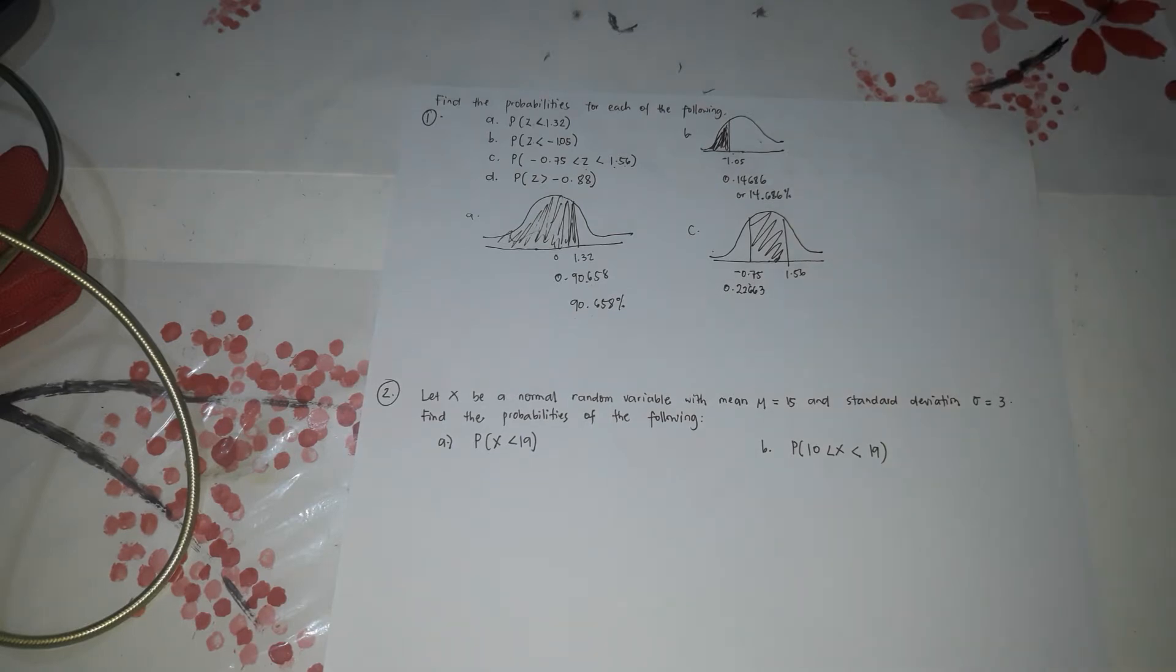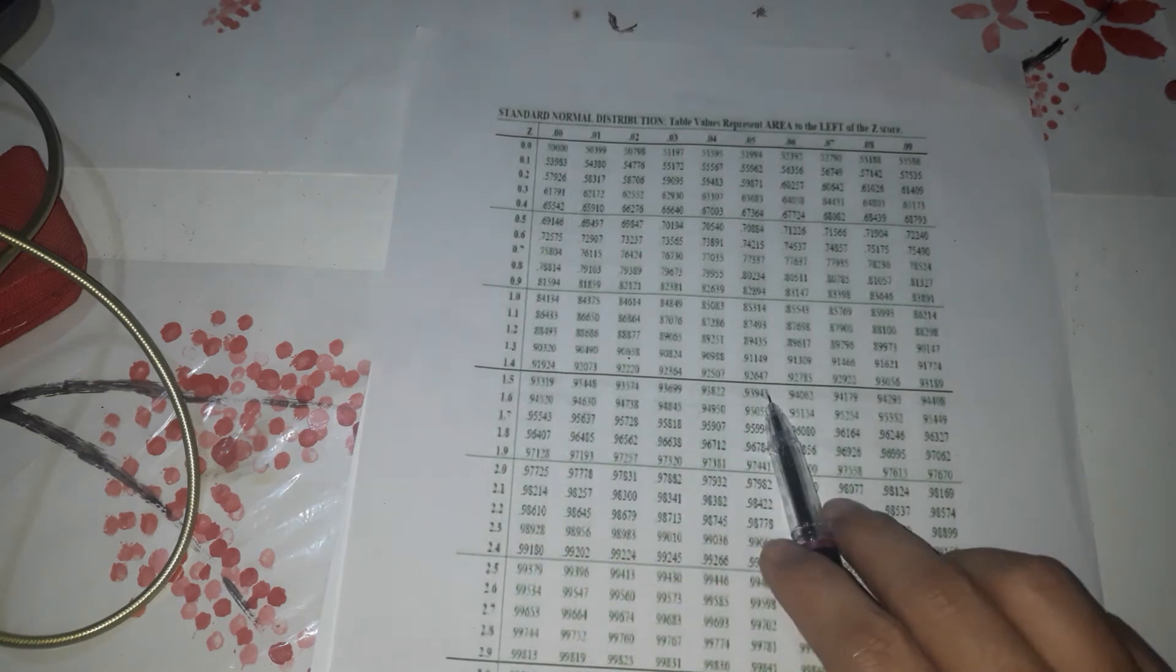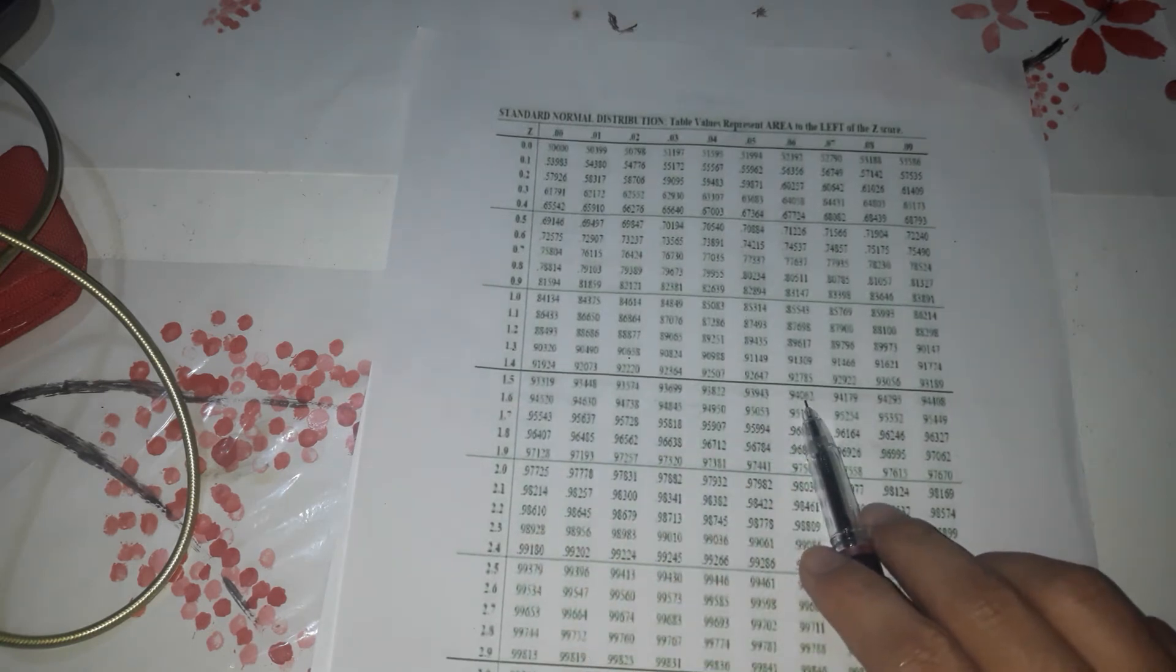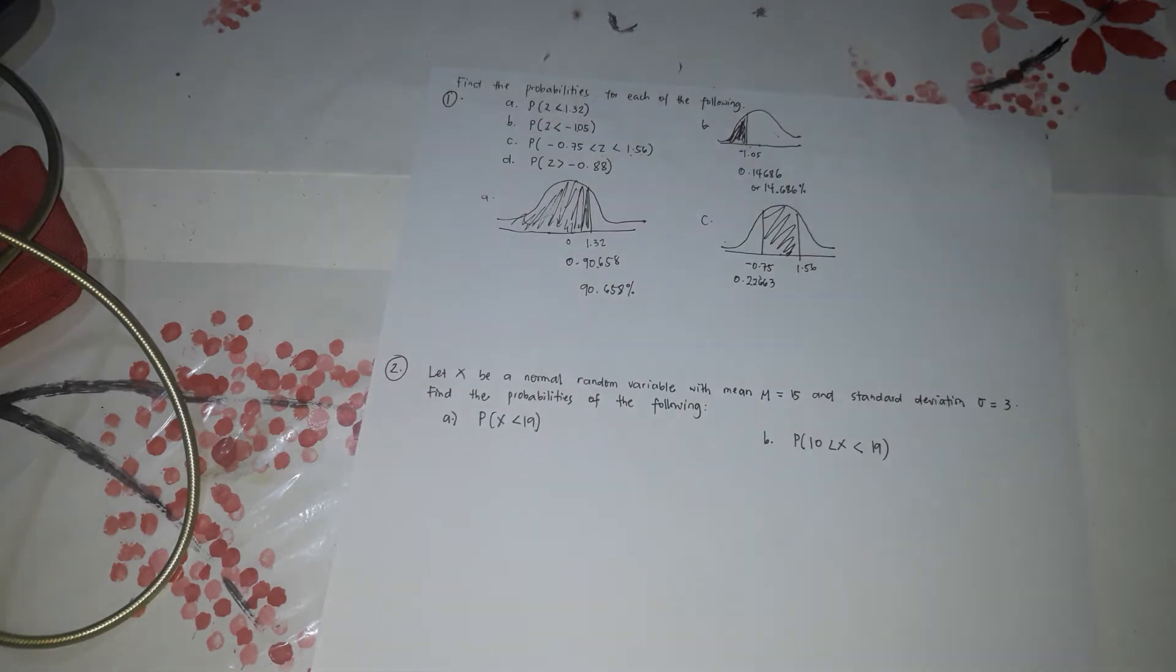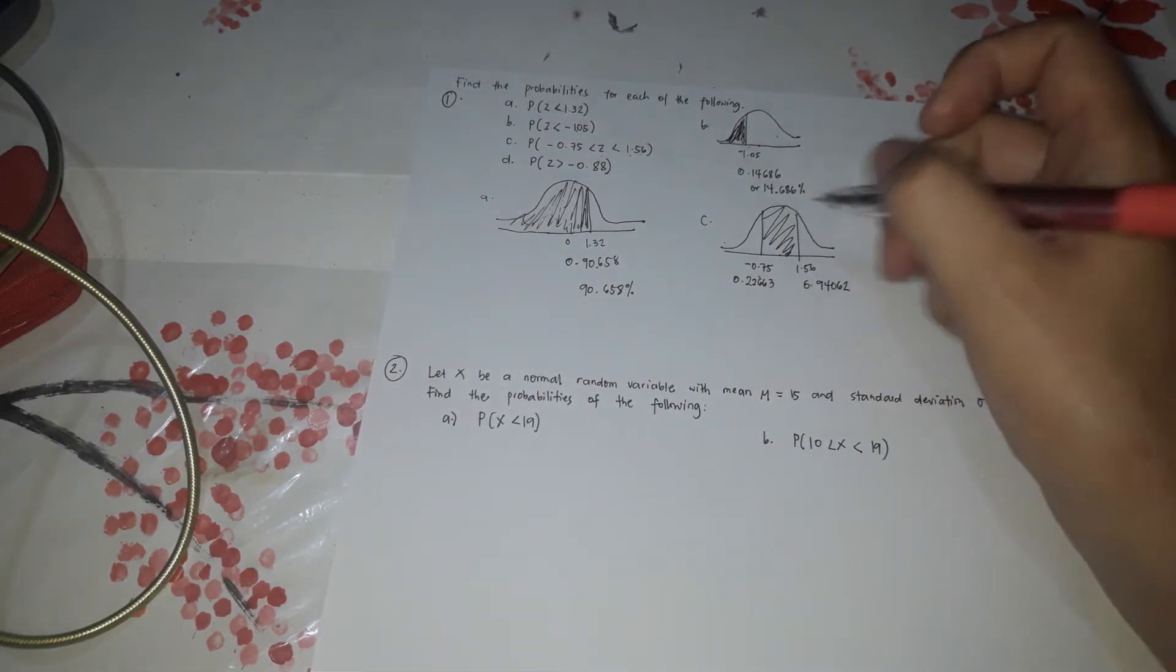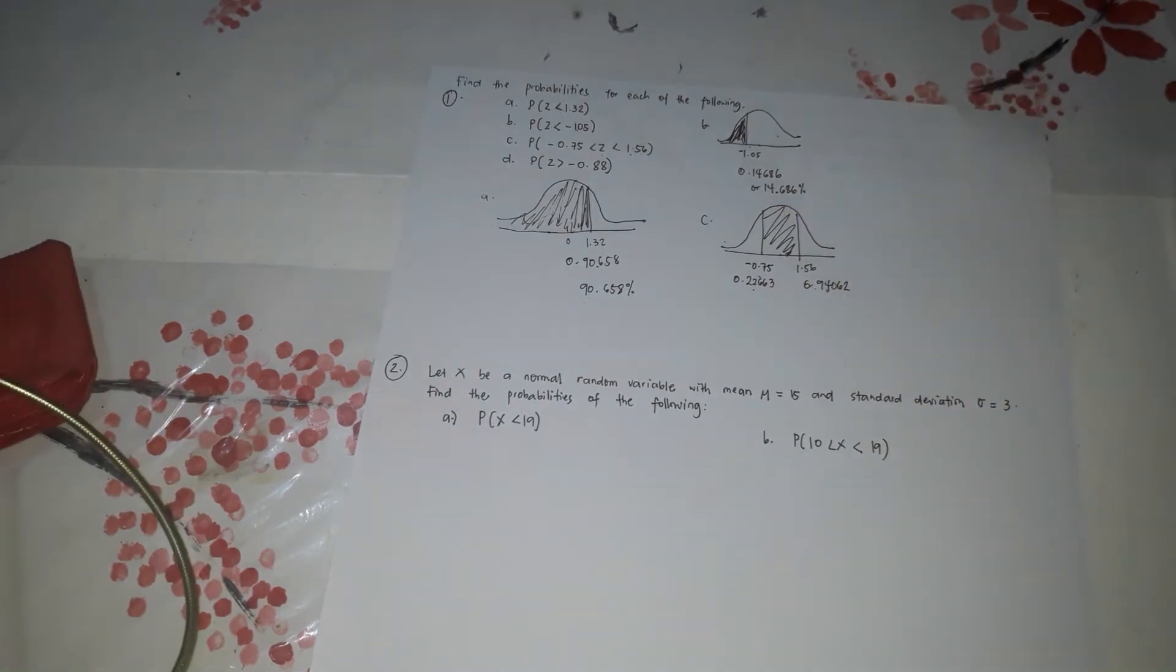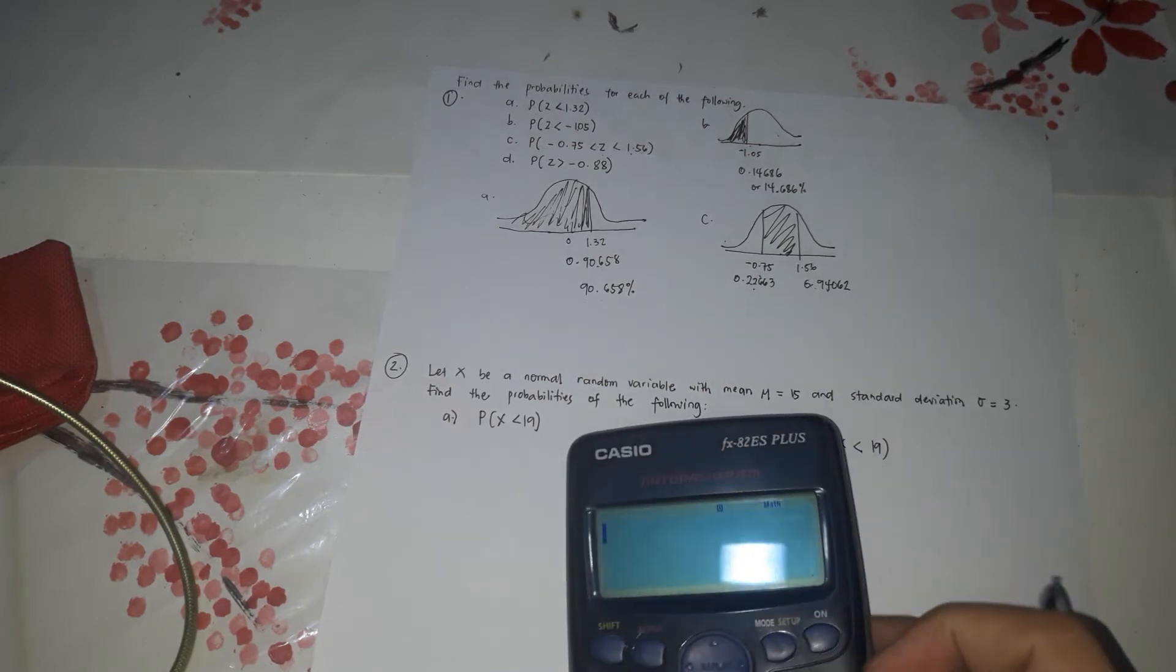Now 1.56. So 1.5 here. We find 6. 0.9406, 0.94062. So when it's in between, you just subtract them. So to make it easier, let's use the calculator.